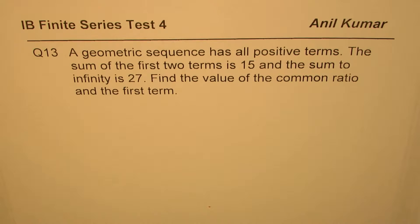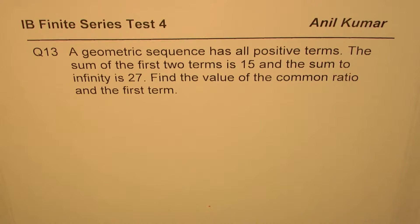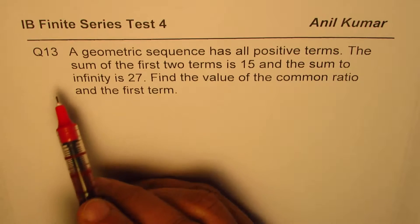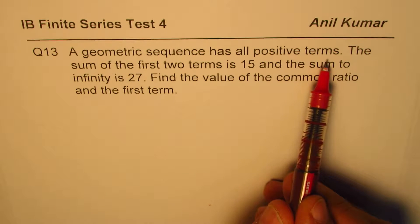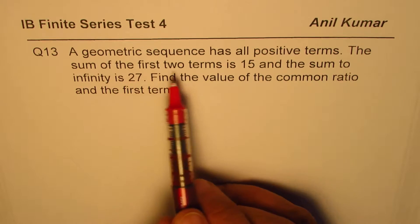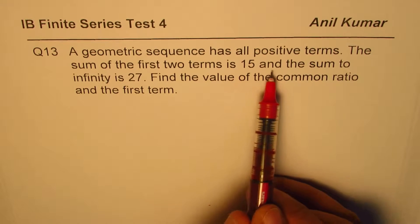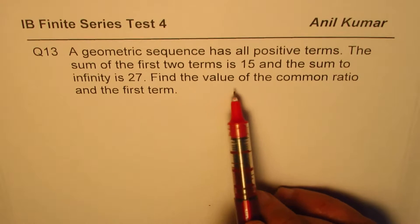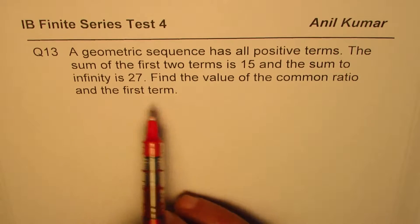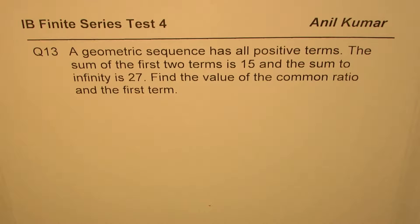I'm Anil Kumar sharing with you some excellent questions from previous test papers. The whole idea is if you understand how to solve these questions, you should be getting better marks. Question number 13: a geometric sequence has all positive terms, the sum of the first two terms is 15, and the sum to infinity is 27. Find the value of the common ratio and the first term.